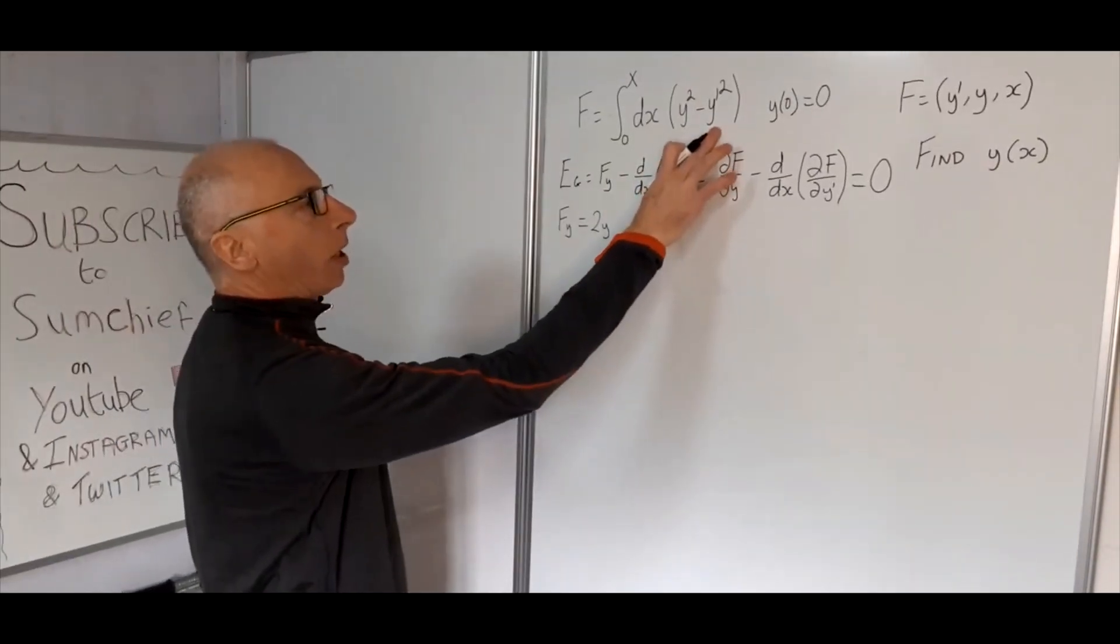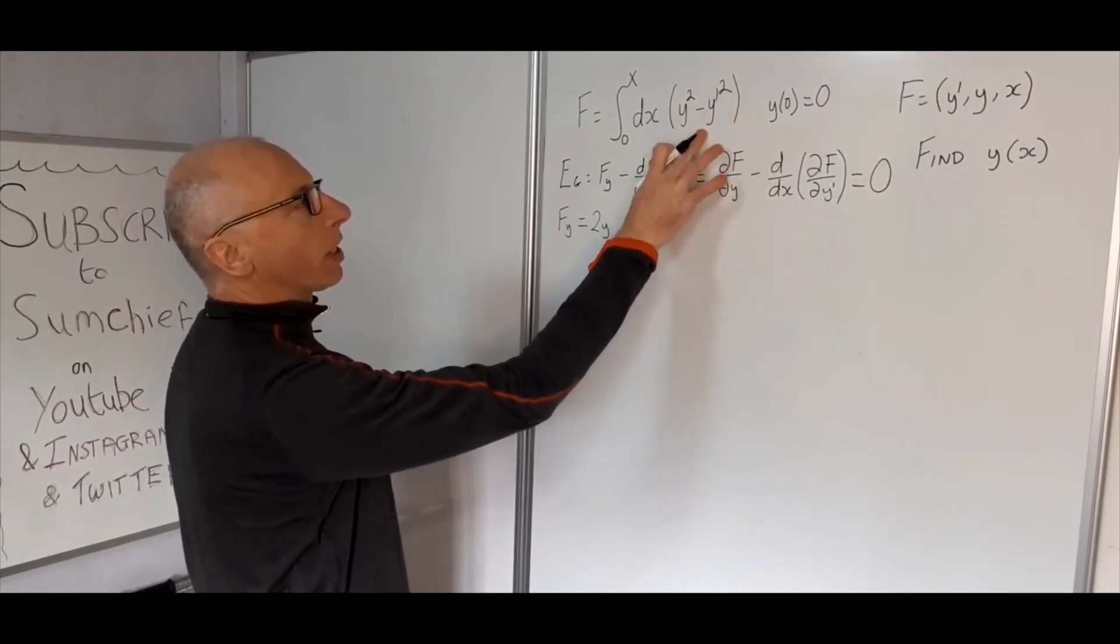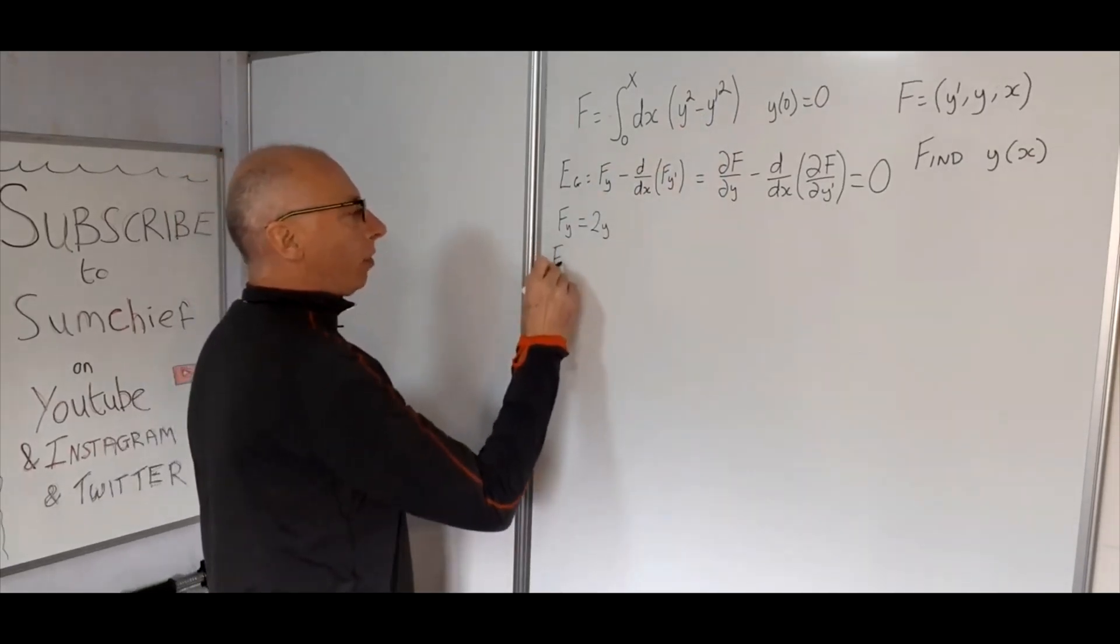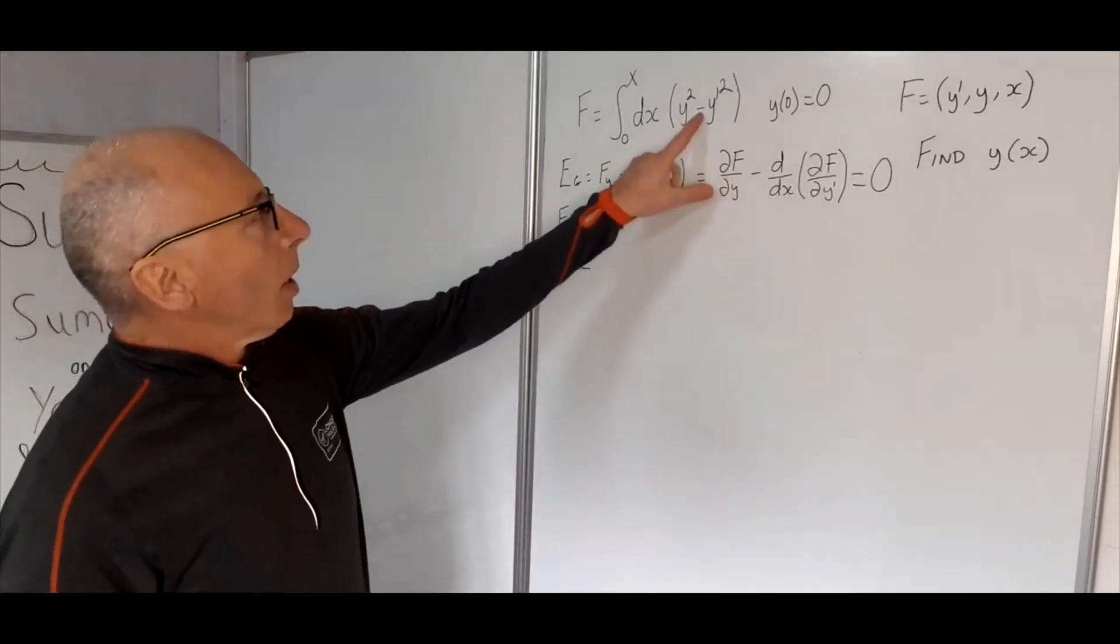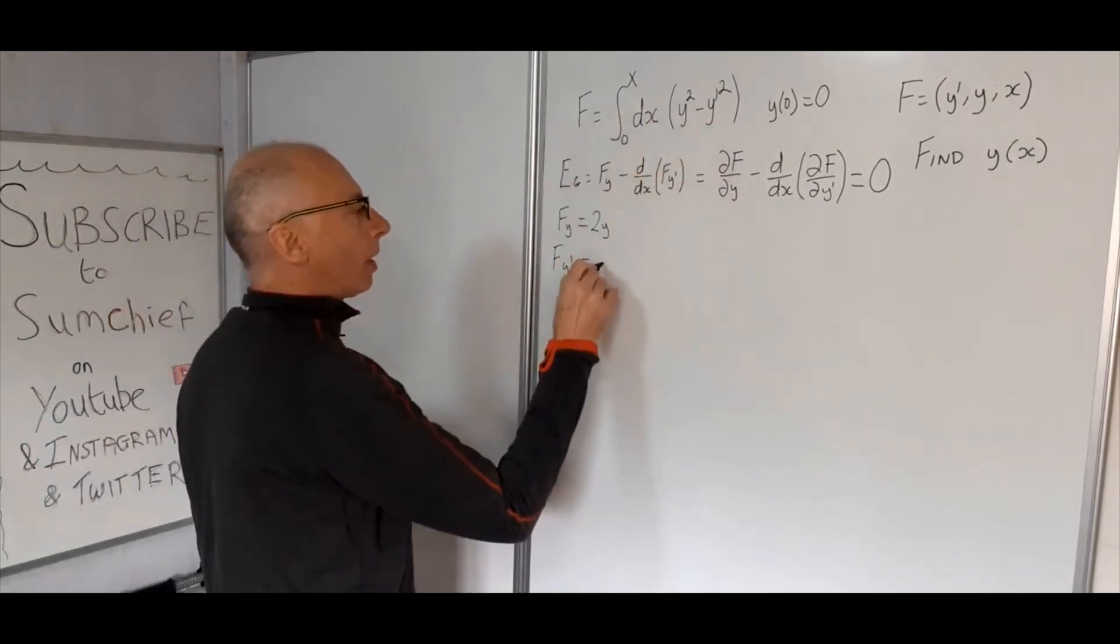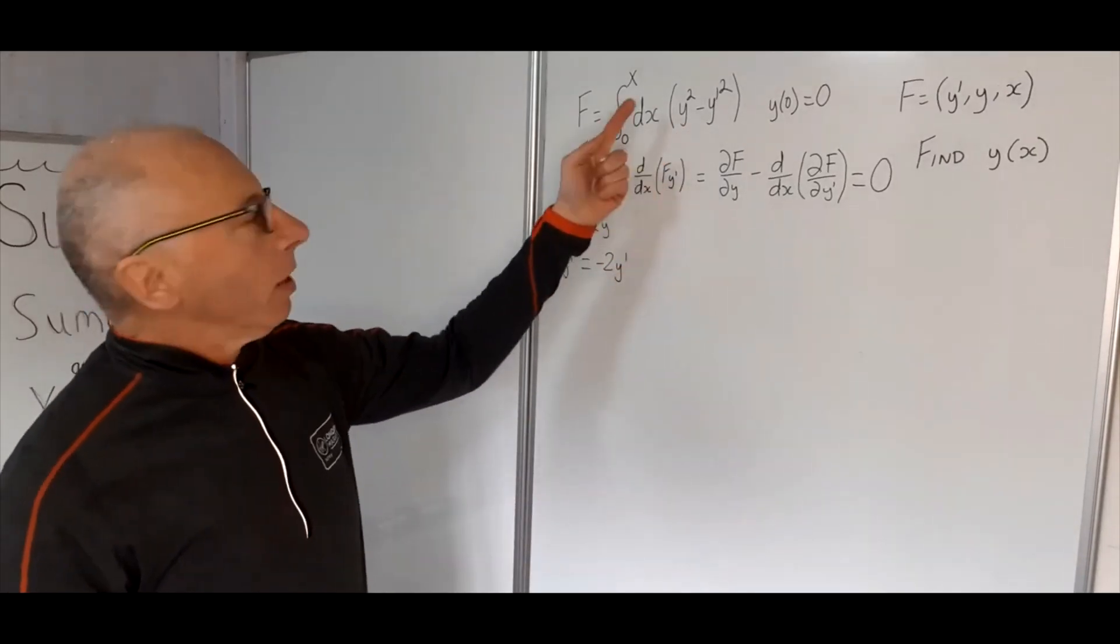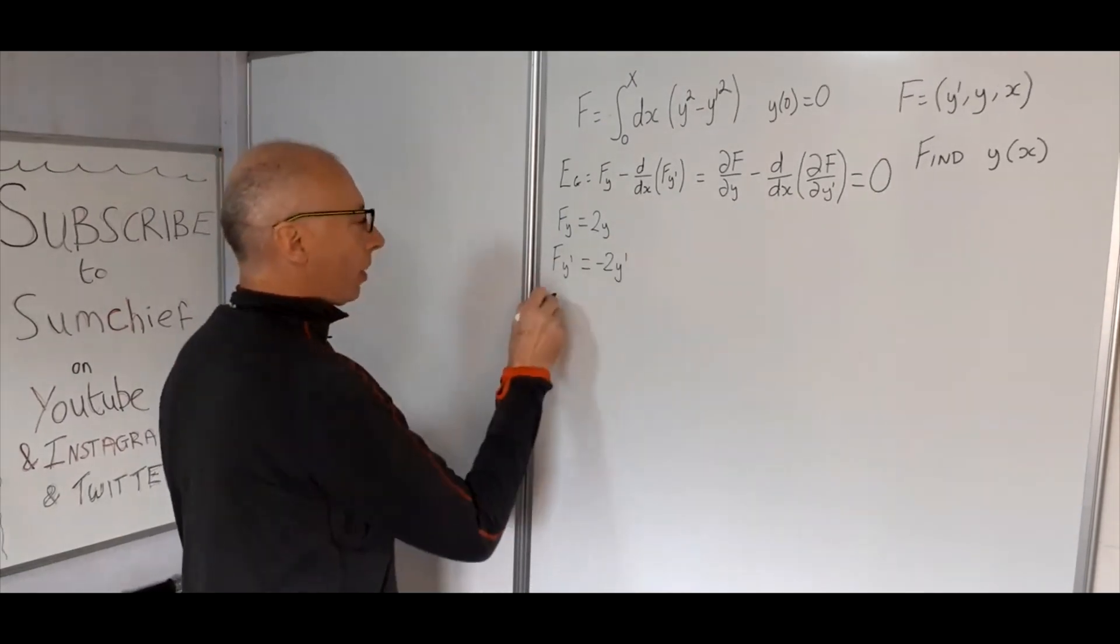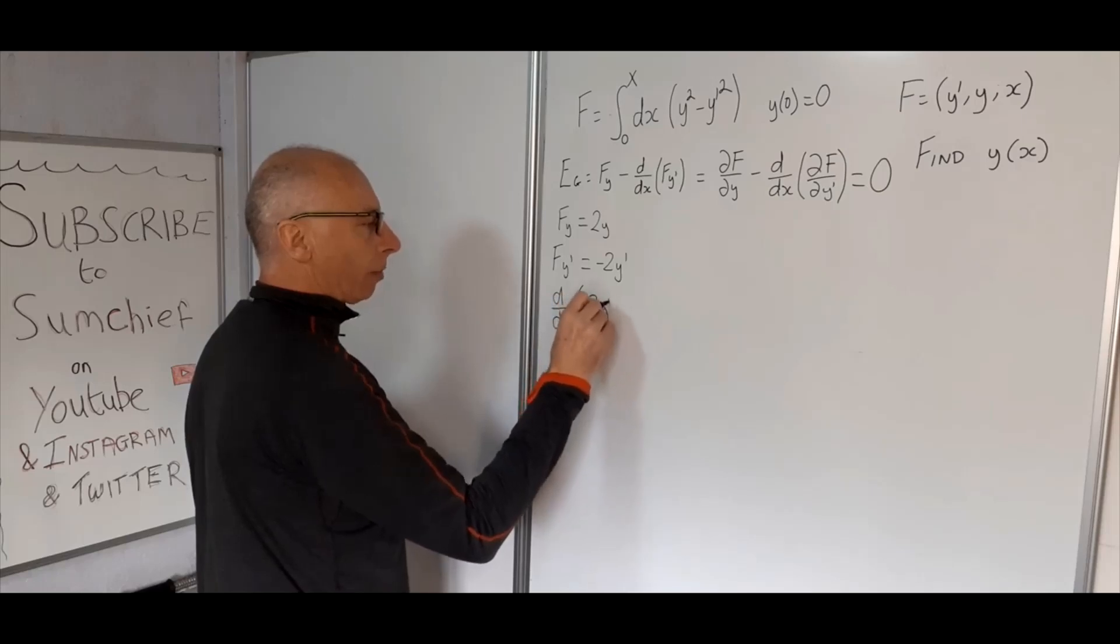Okay, so now let's take our partial derivative with respect to y prime, taking into consideration this minus sign. So f of y prime is minus y prime squared, and the derivative of that is minus 2y prime. Okay, and the y squared—no function of y prime there—so we just leave it as this.